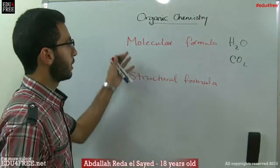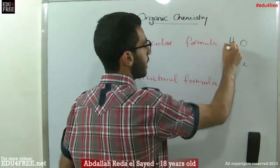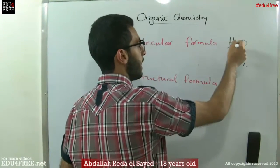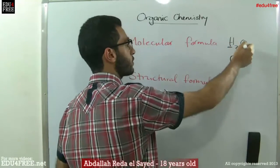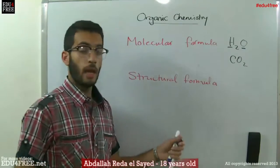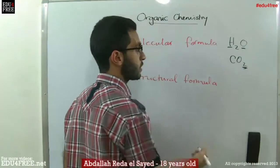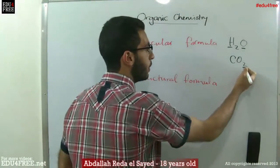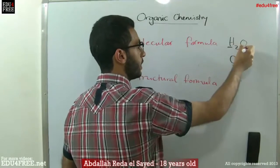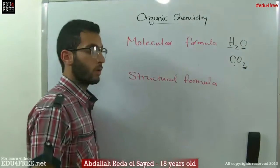The molecular formula shows us the types of atoms — here we have H (hydrogen), O (oxygen) — and it shows us the number of atoms. For example, CO2 has two oxygens and one carbon, while H2O has one oxygen and two hydrogens.